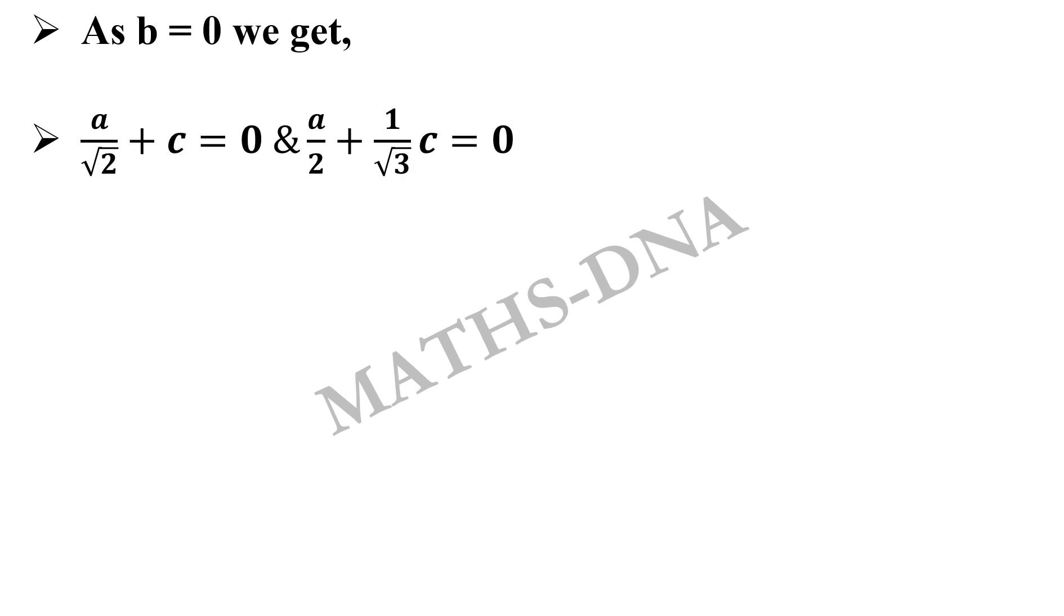And we are left with a/√2 + c = 0 and a/2 + c/√3 = 0. From the first equation a/√2 + c = 0, we get c = -a/√2, and substituting this value in the second equation...